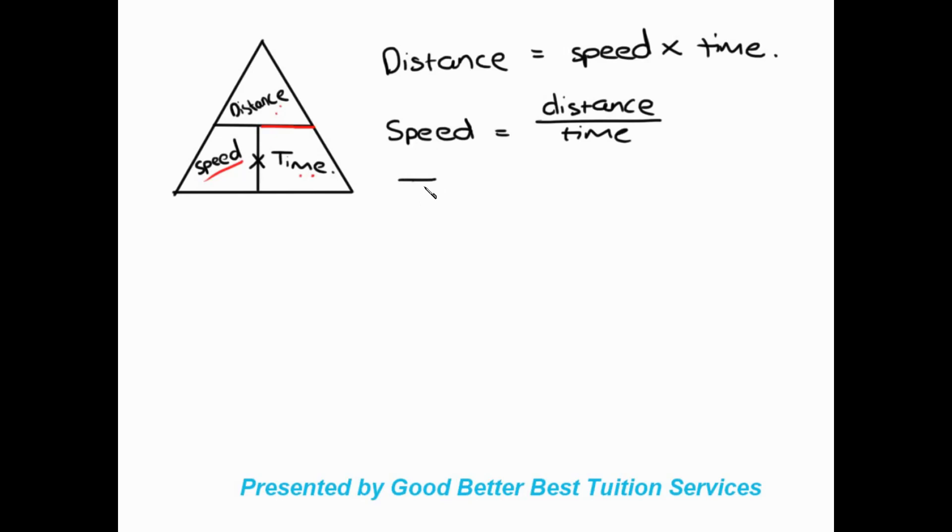And vice versa, if we're trying to work out time, we can see now that distance is over speed. So we write there, time is equal to distance over speed. And that's basically the distance, speed, and time triangle explained.